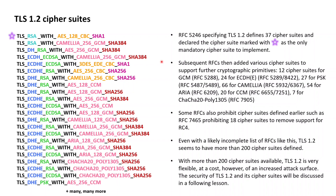Additional support was also added for the use of pre-shared keys, the block ciphers Camellia and ARIA, as well as ChaCha20-Poly1305, which is an authenticated encryption with associated data approach making use of the ChaCha20 stream cipher together with the Poly1305 message authentication code.